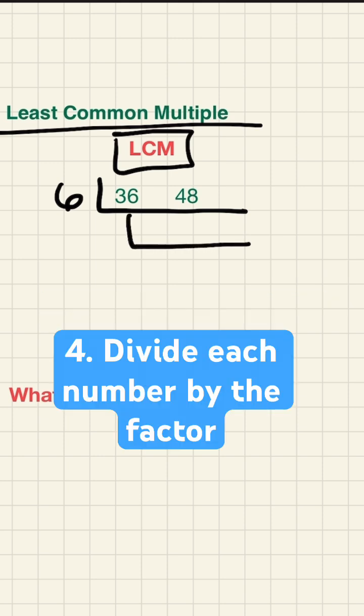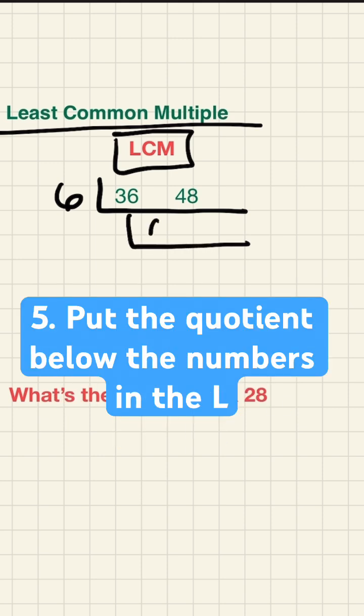I'll pick 6. Put another L underneath, another ladder here, and divide.